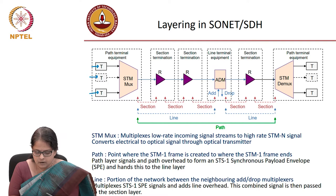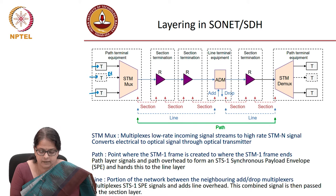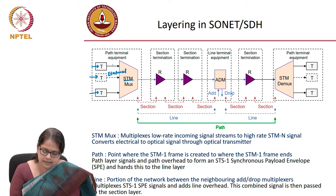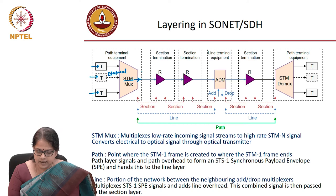We broadly said source and destination and so on. Now we will get into a little more detail of what is required in the header. Let us say you have multiple sources of low data stream. Each transmitter — this is all electrical — has a very slow data rate. There is an STM multiplexer, which is an electrical domain device, which multiplexes low data rates into a slightly higher data rate.